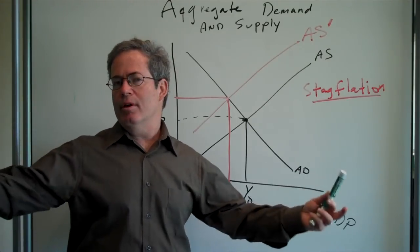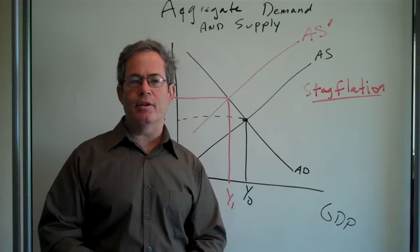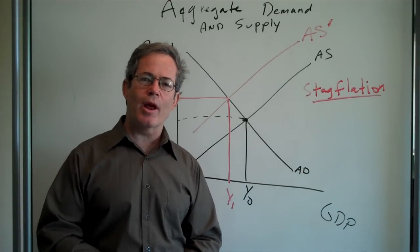the government can have a contractionary fiscal policy, raise taxes, lower government expenditure.